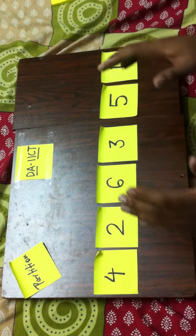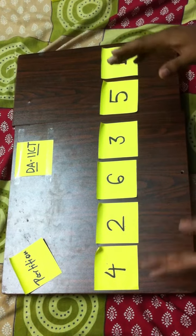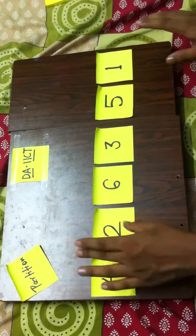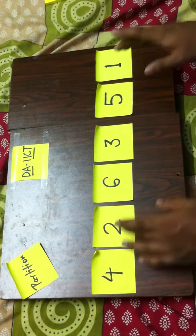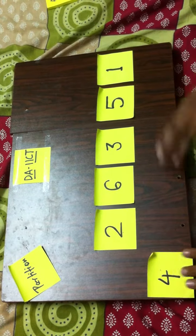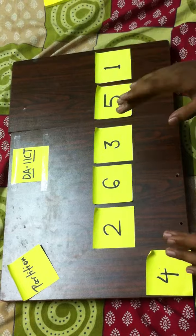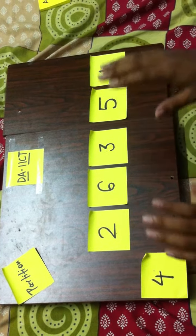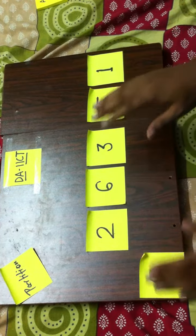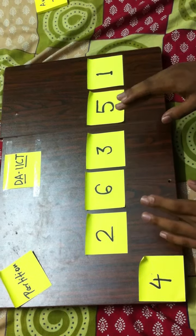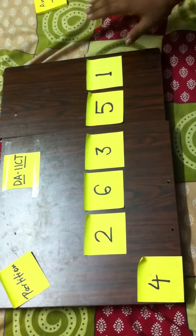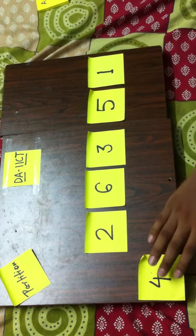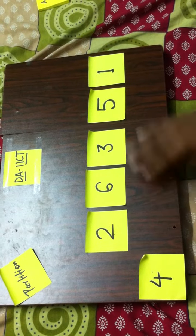Consider any of these elements as pivot. Consider any element as pivot — let us consider 4. So considering 4 as pivot, at the end of partition, 4 should reach the position where it should belong in a sorted array. If this was a sorted array, 4 should belong to the 4th position.